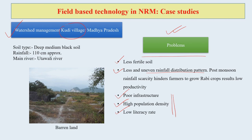This particular village had deep medium black soil. As you know, black soil is normally considered reasonably good soil, having high organic matter content. Rainfall was approximately 110 centimeters and the main river in the area is Utaoli river. You can see from this picture how barren the land is. In such land, growing food crops could be a very big challenge, so a good watershed management could be an efficient way to manage natural resources here — soil, water, and plant.